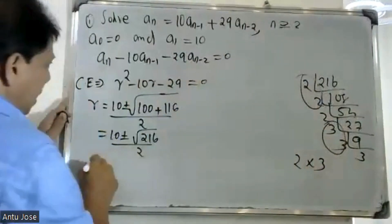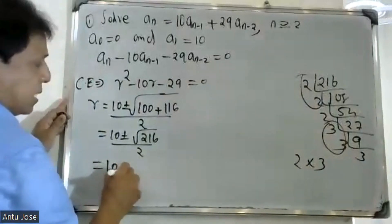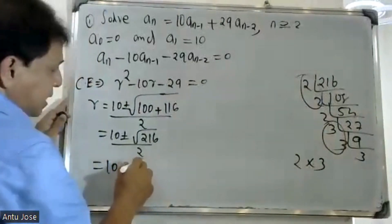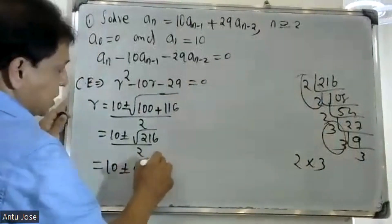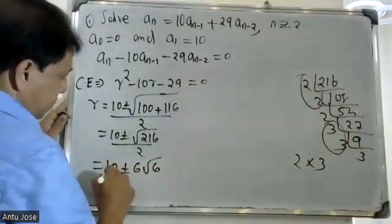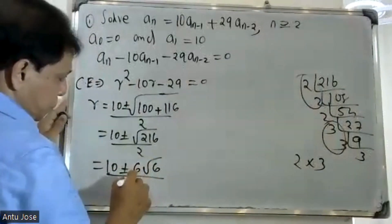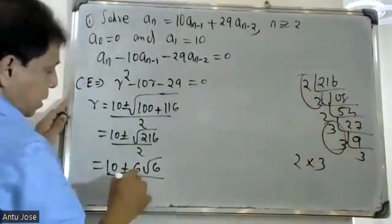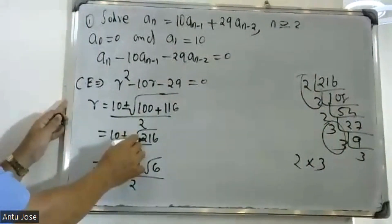Using the quadratic formula, we get 10 plus or minus 6 root 6, divided by 2, which simplifies to 5 plus or minus 3 root 6.